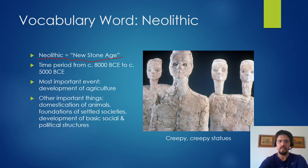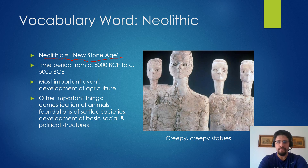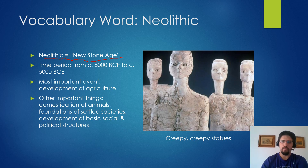The most important event of the Neolithic era is the one we're going to spend most of our time talking about: the development of agriculture. There are a few other important things — the domestication of animals, founding settled societies, and the development of the basic social and political structures that we'll see for the rest of the class. But we'll talk more about those later. Here are some creepy statues from an archaeological site in Jordan.